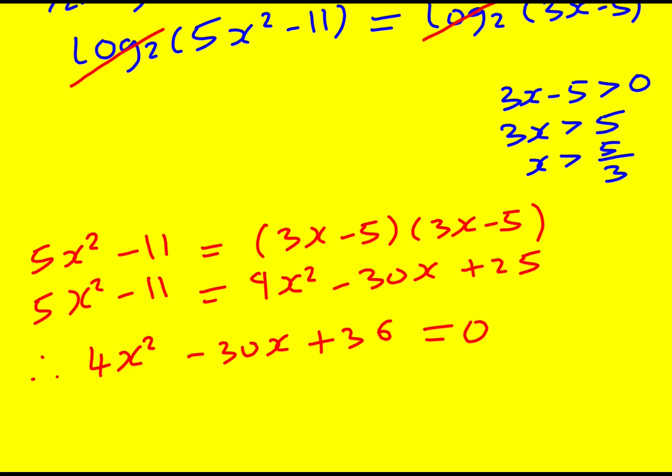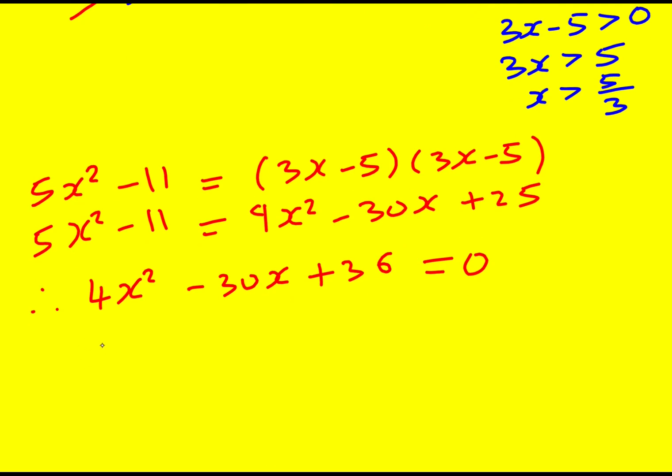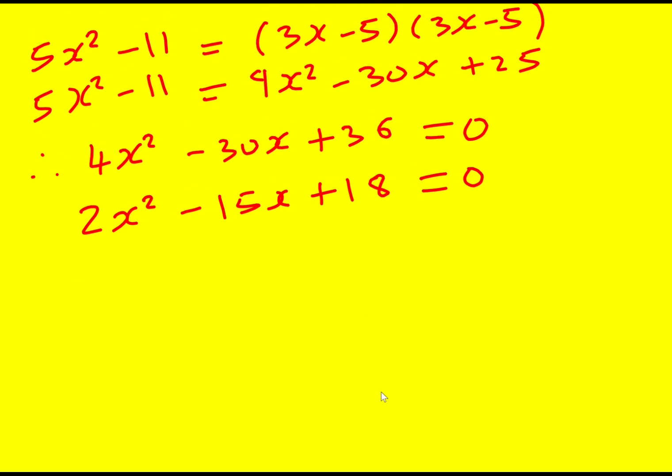There's a common factor not of 4 but of 2 so I can divide through by 2. And then I'm going to seek to factorize. Okay if it's going to factorize I need to have a 2x and an x and I can just try some numbers.